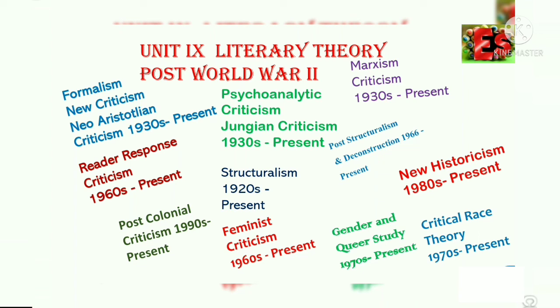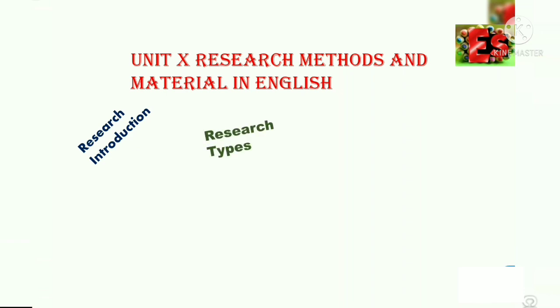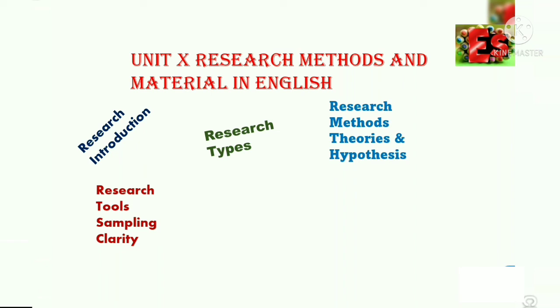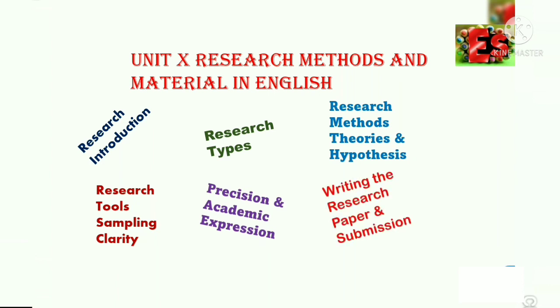Also in Unit 9: Critical Race Theory from the 1970s to present. Unit 10 covers Research Methods and Materials in English. Topics include an introduction to research, research types, research methods, theories and hypotheses, research tools and sampling, clarity, precision and academic expression, and writing and submitting the research paper.